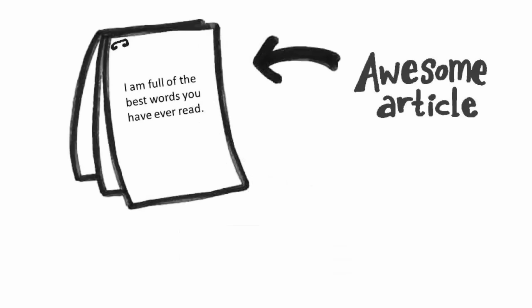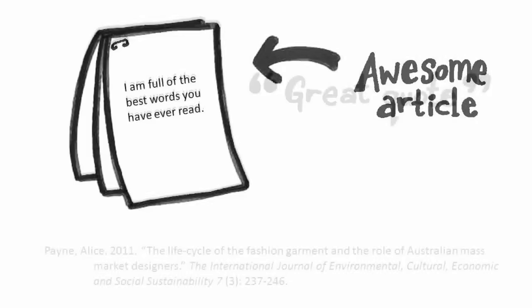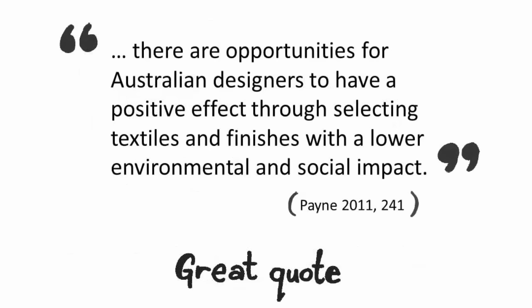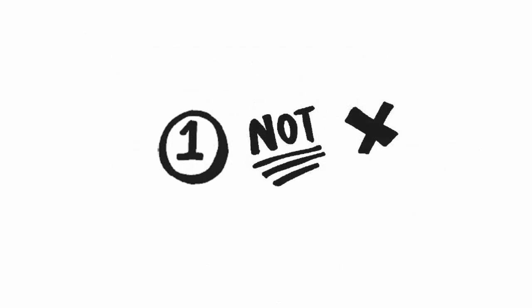To paraphrase, we start with a source of information. You may have found an awesome article for your assignment. For example, I might be writing an assignment on sustainability in the fashion industry in Australia, and I found this great article by Alice Payne. Within it, I located the perfect quote about how designers have an impact on the industry. My quote is: 'There are opportunities for Australian designers to have a positive effect through selecting textiles and finishes with a lower environmental and social impact.' While I could just use the direct quote, I want to paraphrase this so I keep the direct quotes in my assignment to a minimum but still have excellent sources for my argument.